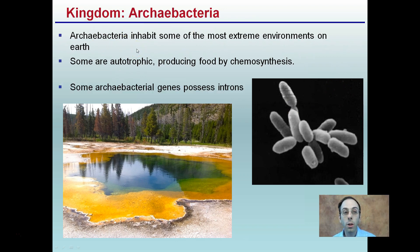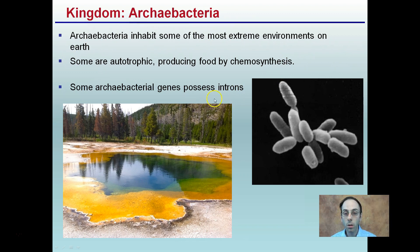Archebacteria inhabit some of the most extreme environments on Earth. Some are autotrophic, meaning they produce food by chemosynthesis. Some Archebacteria genes possess introns. The extreme environments include hot springs, shown here, and this is kind of what they look like under the microscope.